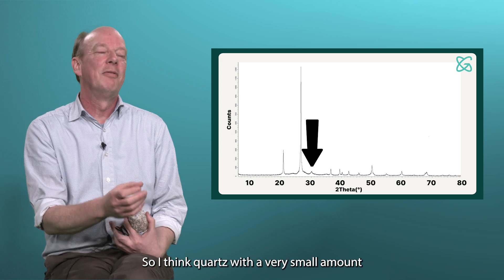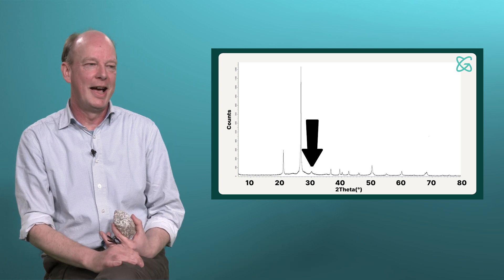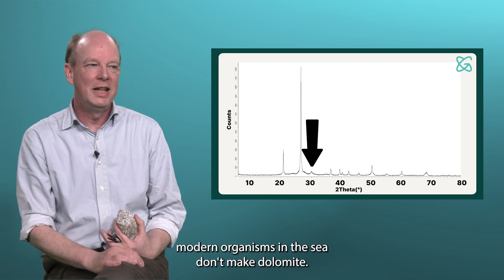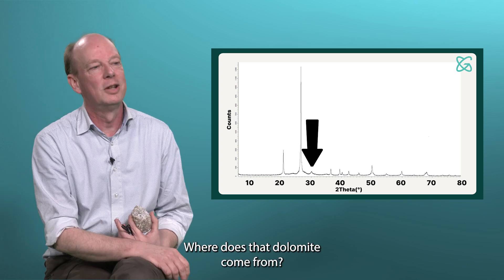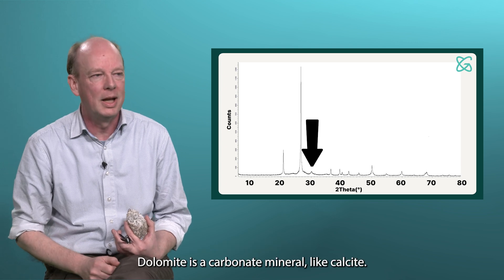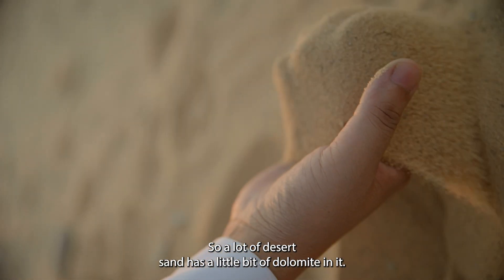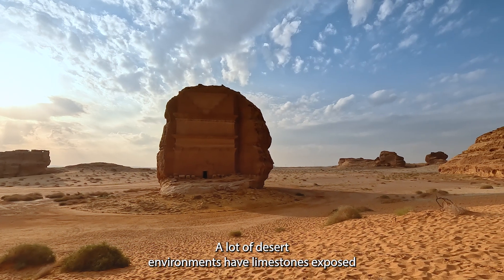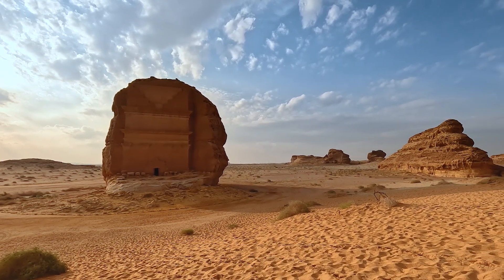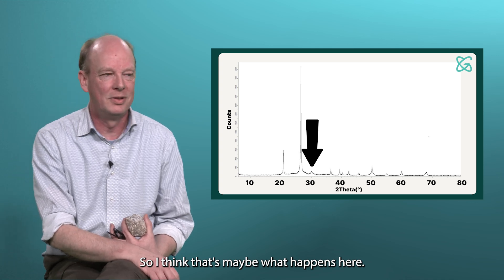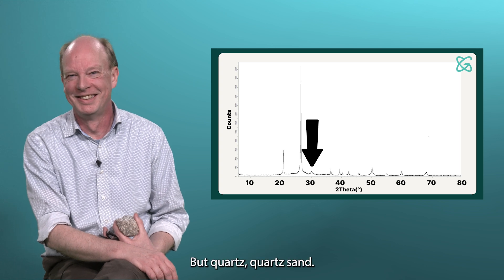So I think quartz with a very small amount of dolomite — which is interesting because modern organisms in the sea don't make dolomite, so it's not shell fragments. Where does the dolomite come from? Dolomite is a carbonate mineral like calcite. I think it came from a rock. A lot of desert sand has a little bit of dolomite in it. A lot of desert environments have limestones exposed and they weather and produce little grains of carbonate. That's maybe what happens here.